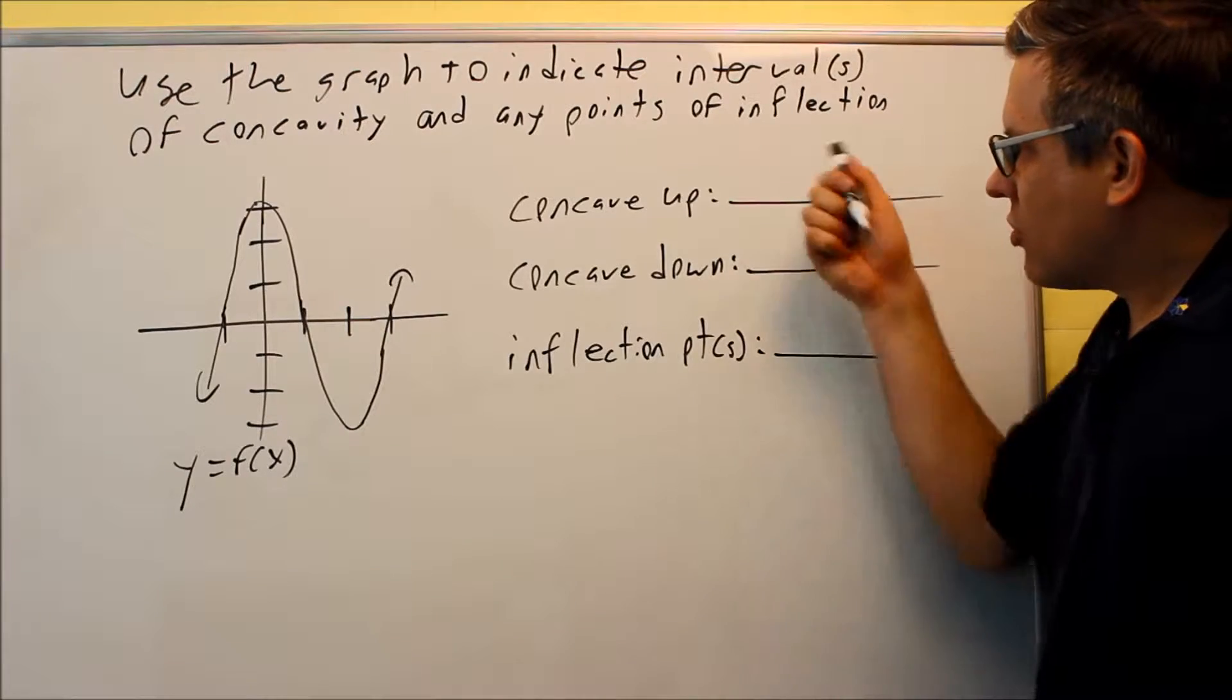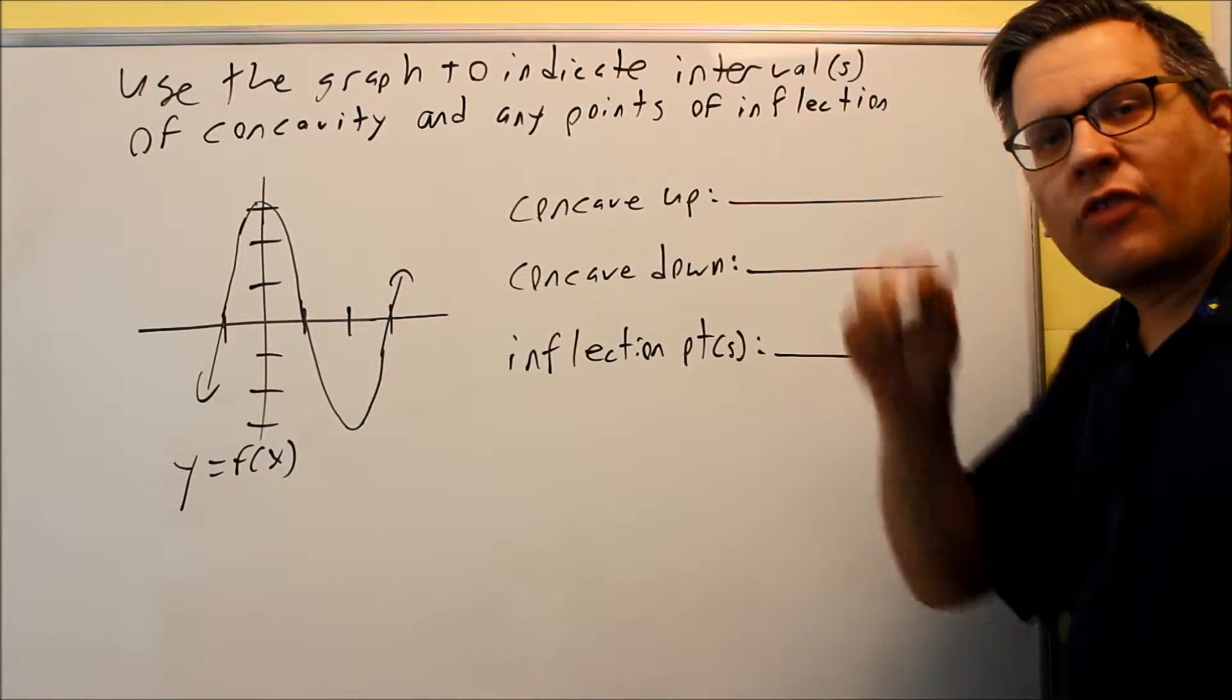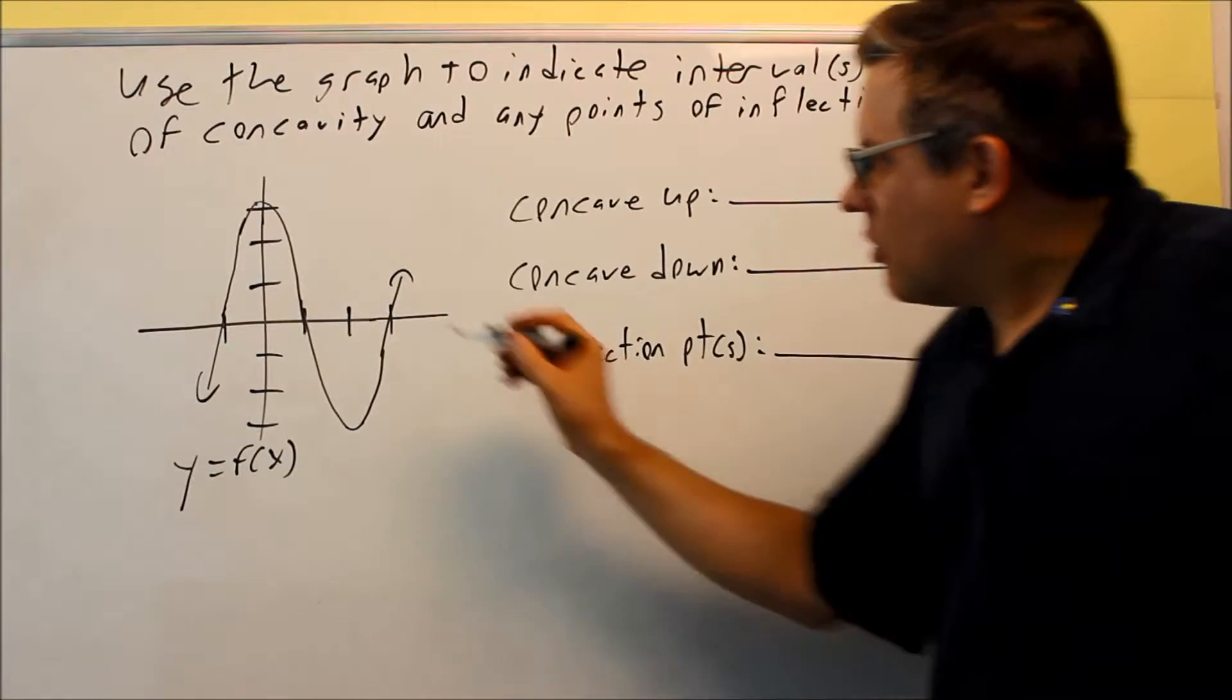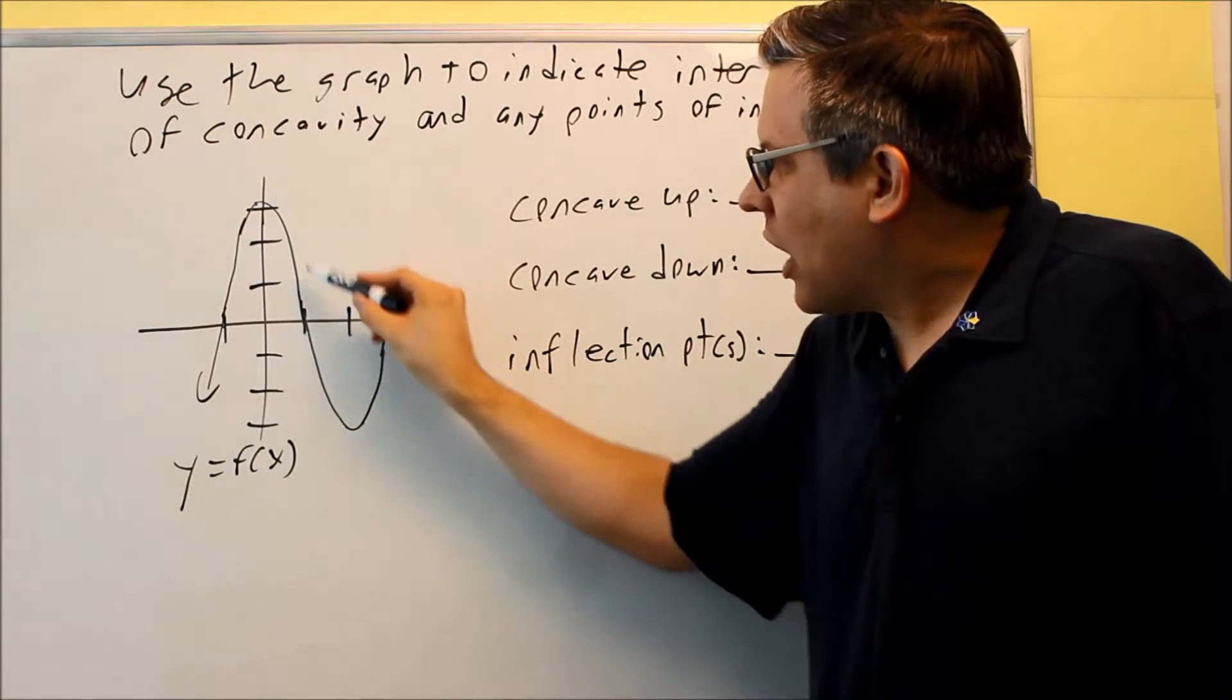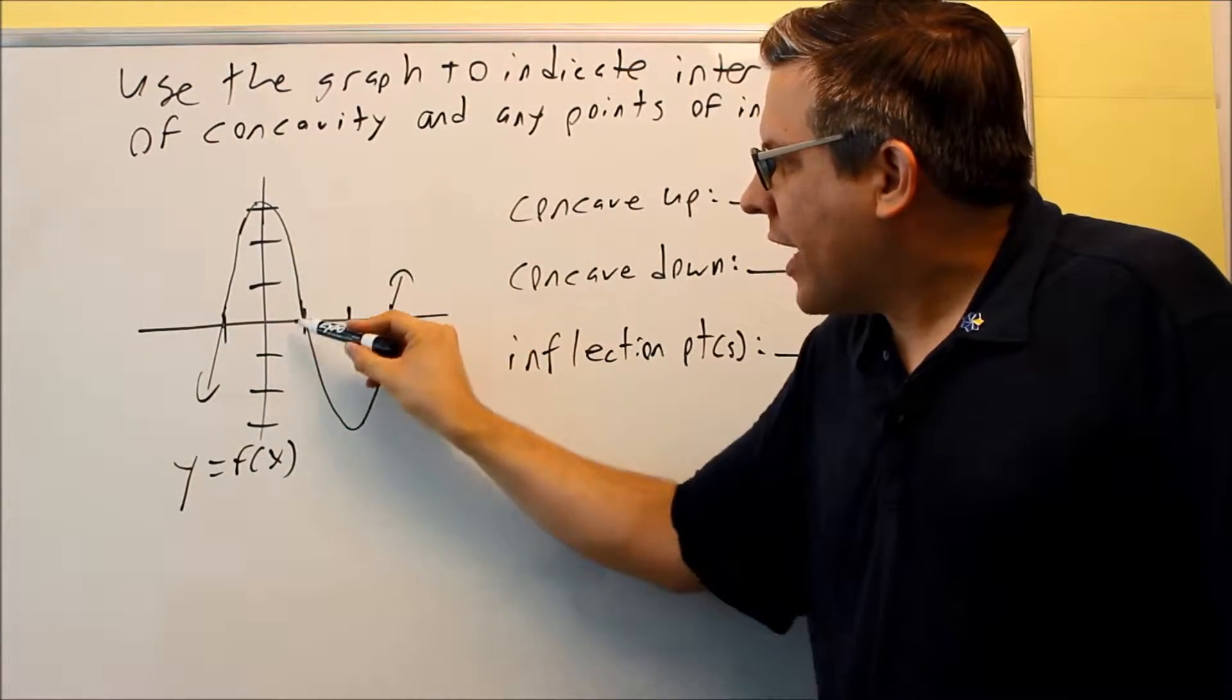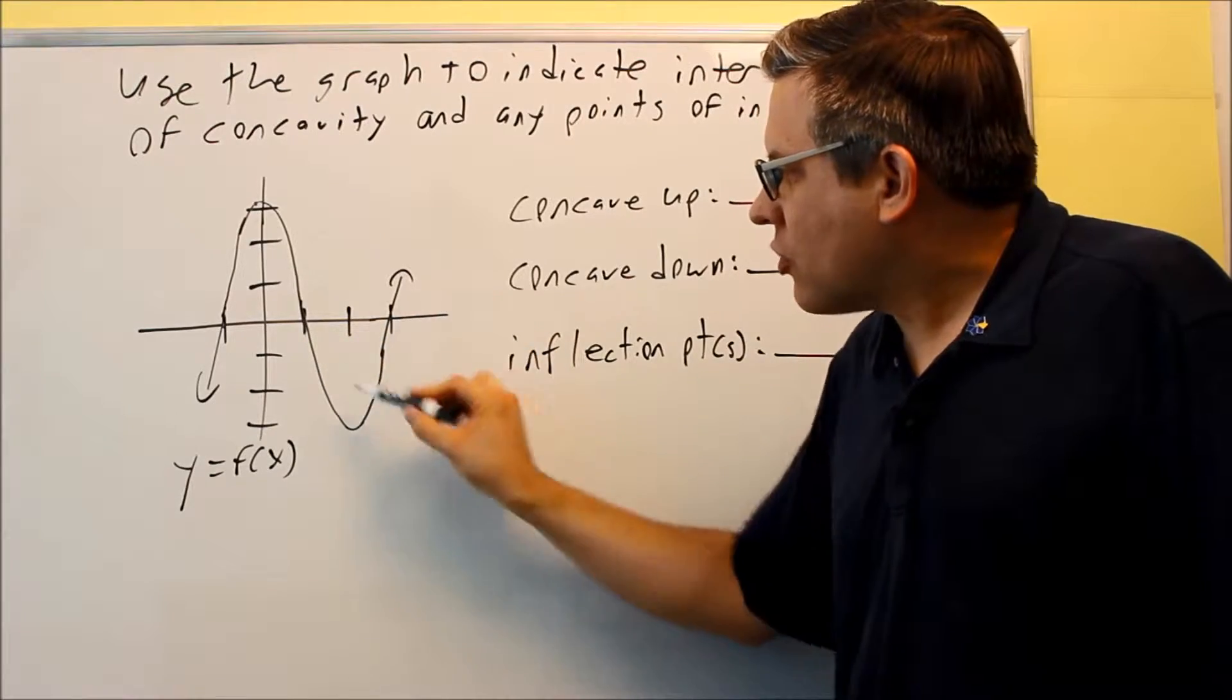So first let's look at concave up. Now concave up is talking about where the graph opens up. So I see here that this section of the graph, this would be opening down and then this section of the graph is opening up.